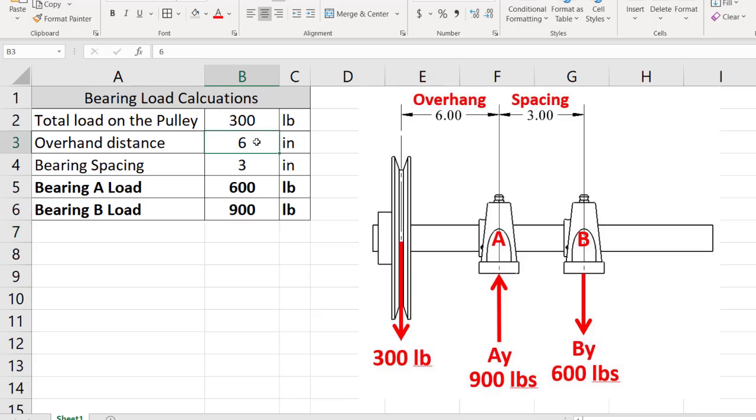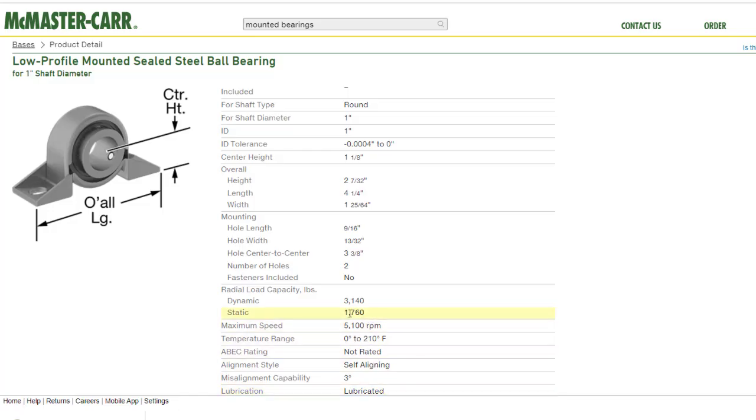Now what if this overhanging distance was increased to 12 inches? So it's overhanging at a much larger leverage distance. Now look how that affected the bearings, 1,200 pounds and 1,500 pounds. And what if our bearing spacing was even smaller? Let's say that we only spaced the bearings 2 inches apart instead of 3 inches apart. Now we have bearing loads upwards of 2,000 pounds. And this bearing that we picked from McMaster Carr just couldn't handle that.